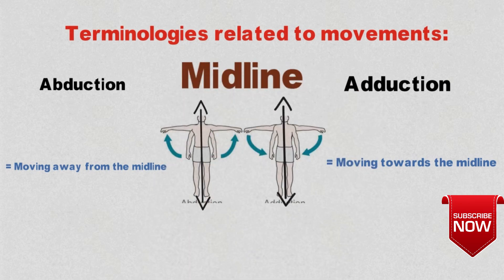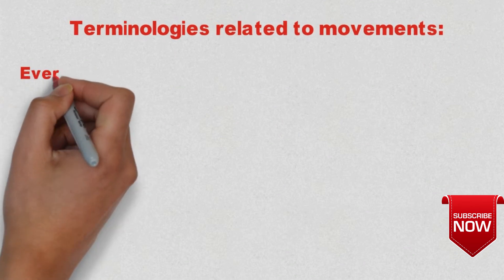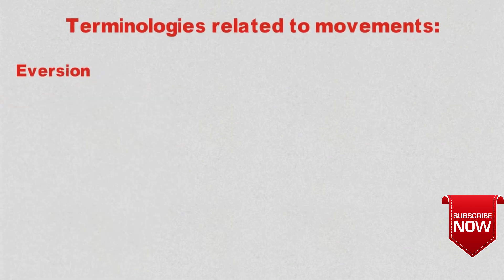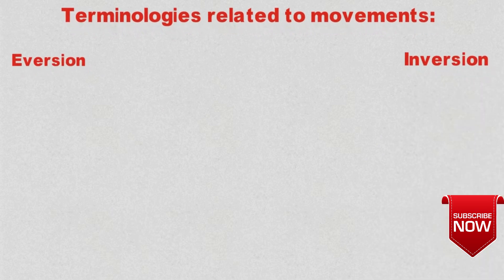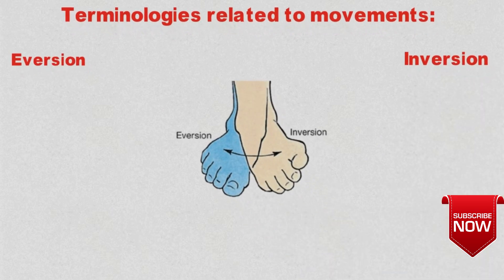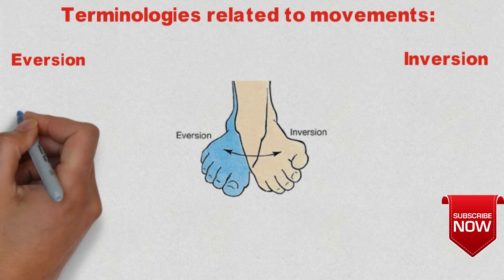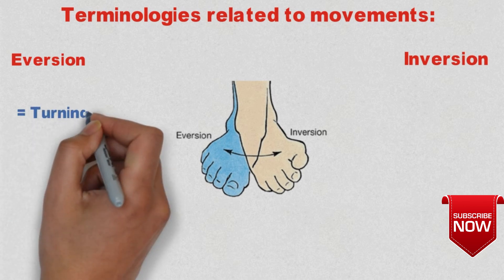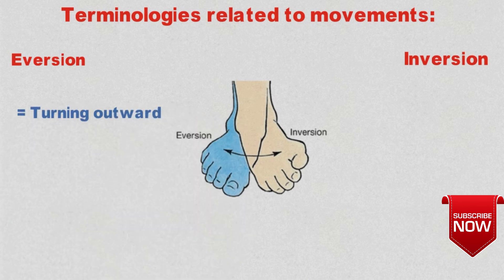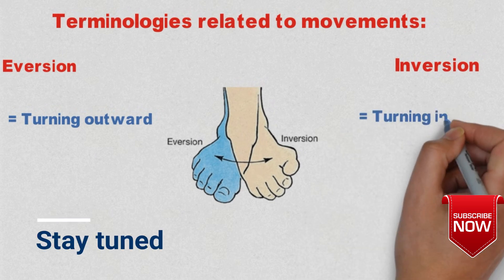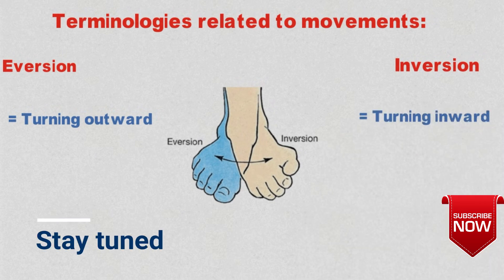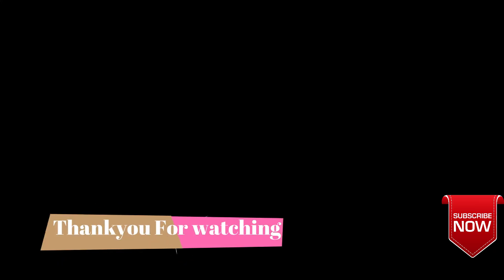Next we have eversion and inversion. In eversion, the body part is turning outward, while in inversion, the body part is turning inward.